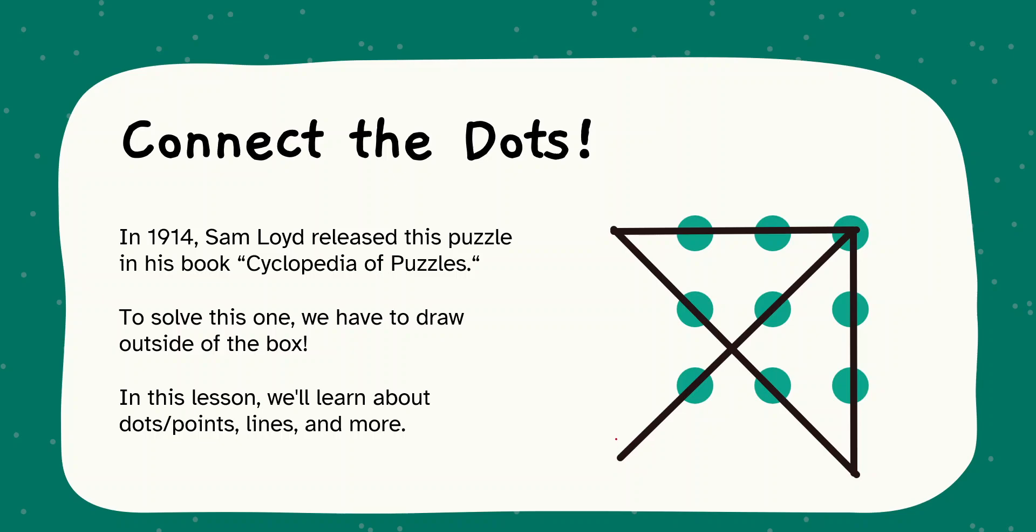Here while connecting, we are starting from the external point and we are going this one. Then we are coming down. Then we will be having this 45 degree slope. Then we are joining. This is the way of connecting the dots without lifting the pen with 4 lines.